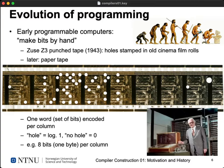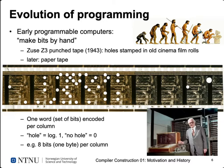Early programmable computers had ways to change the executed program. One example is Konrad Zuse, a German engineer who developed the first computers in Germany during World War II. The machine standing behind him in the photo is a reproduction of his first working computer, the Z3, which operated with electronic relays but was destroyed in the war. A reconstruction built by Zuse and his students is now in the Deutsches Museum in Munich, and another — built by Konrad Zuse's son — is in the Museum of Telecommunication in Berlin.